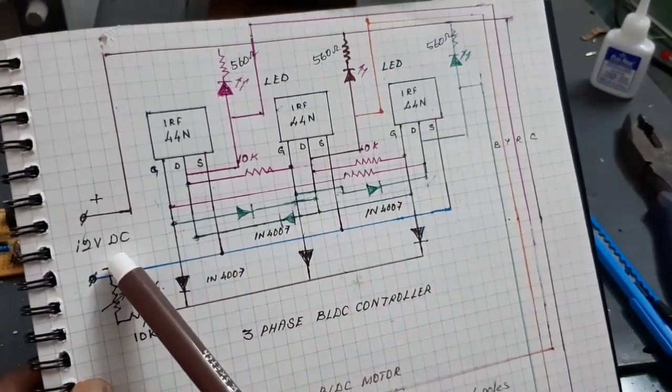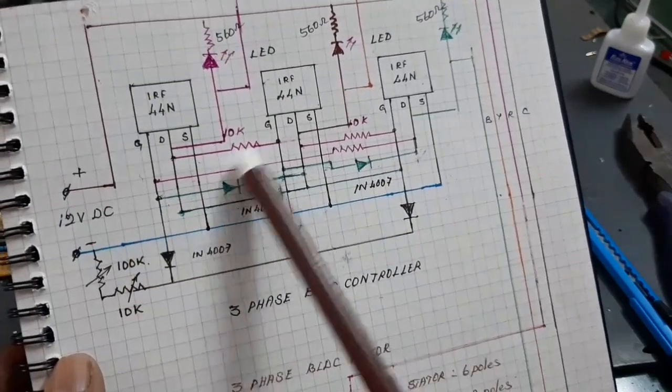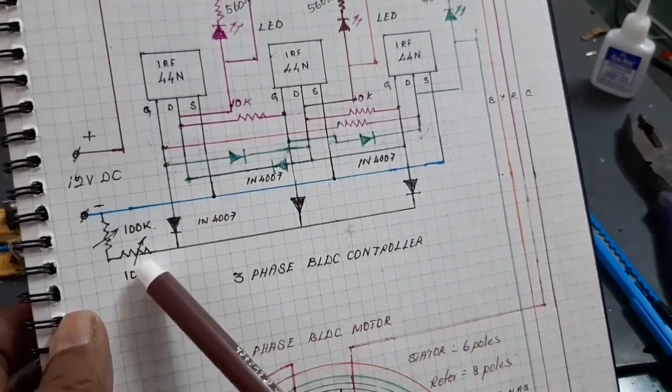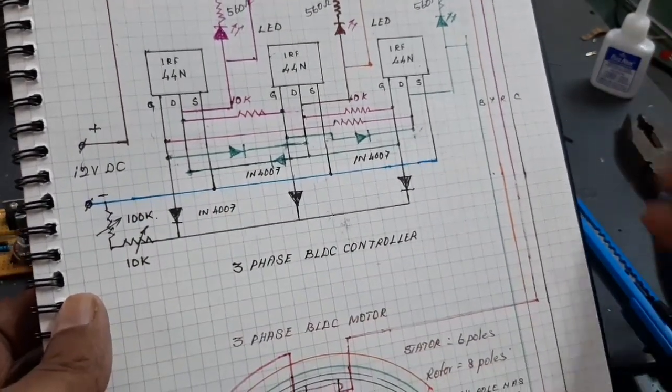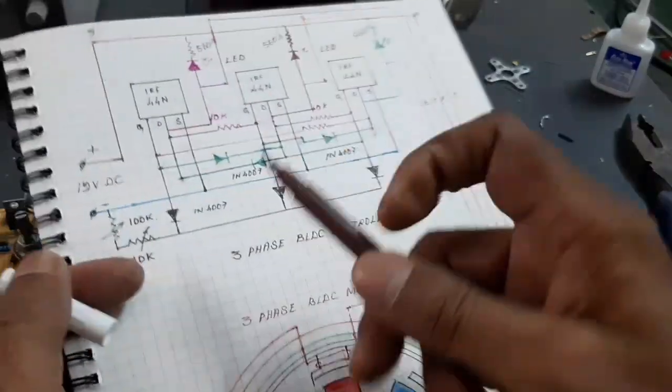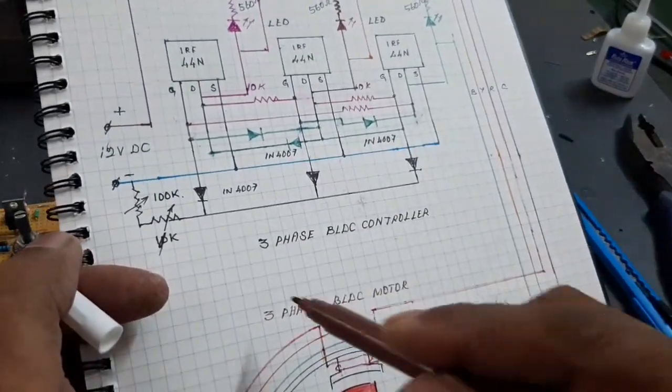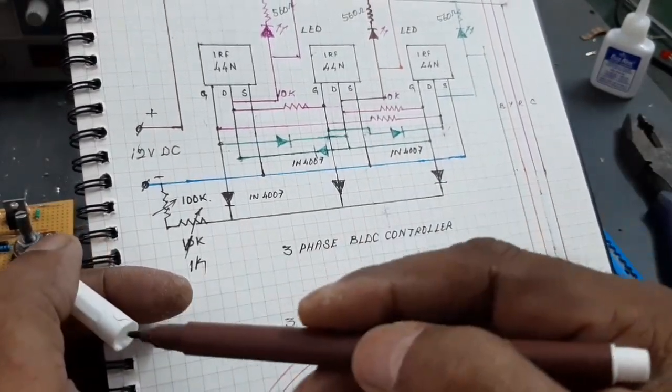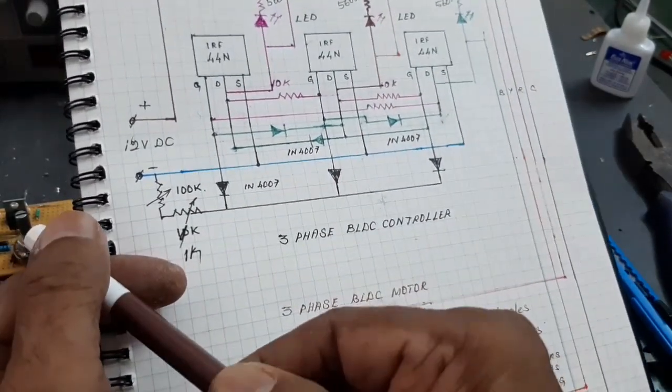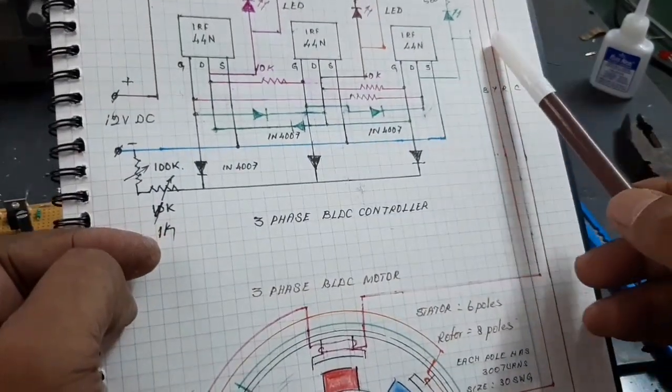Here, this is the 12V DC supply given. Here, this is the varying pot. Here, minimum 1K resistor is used. And look at this. The output terminal, 4 terminals.